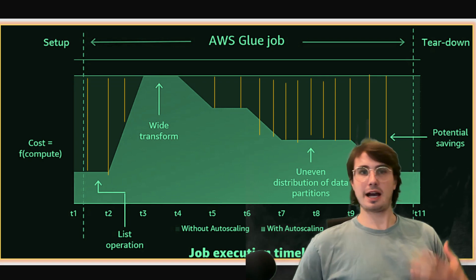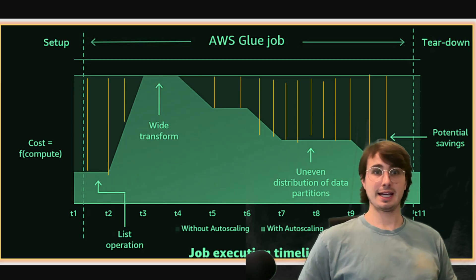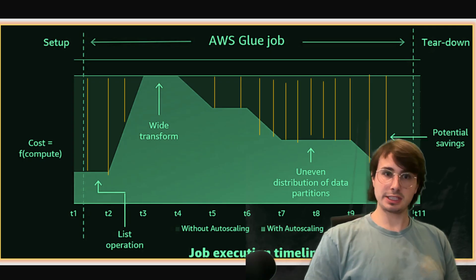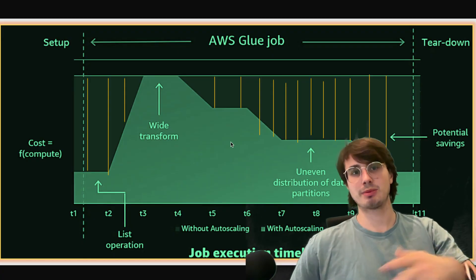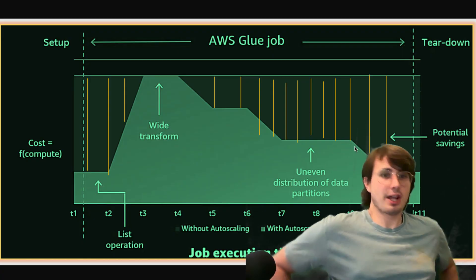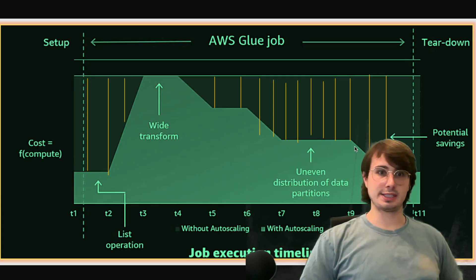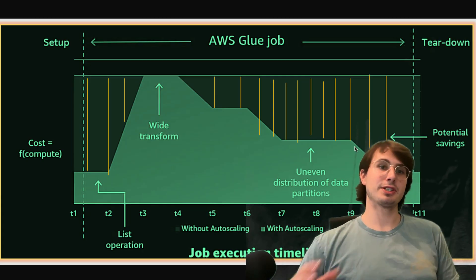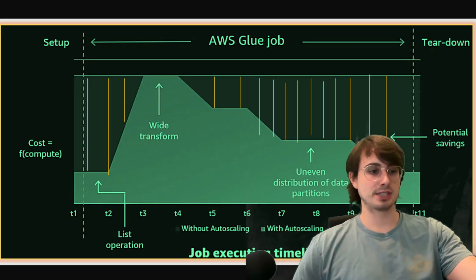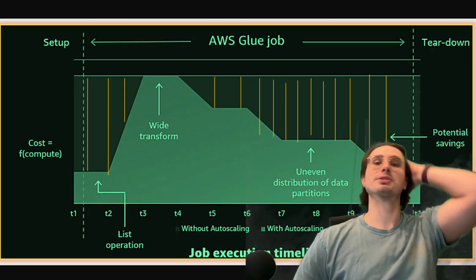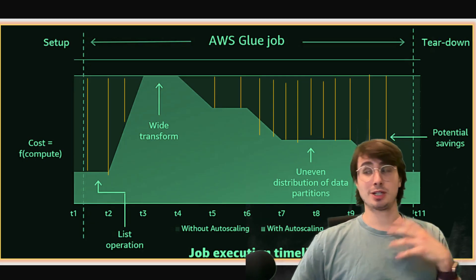Now let's talk about performance optimization. The first thing is choosing the right worker type. You want to benchmark your jobs and figure out what amount of work they actually need. The standard worker for Glue is 16 gigs of memory and four CPUs, and you can increase or decrease that based on what you need. You want to make sure whatever size you choose is not under-provisioned — where you don't have enough resources to complete jobs in time — or over-provisioned, where you have excess compute that isn't actually being used, which you're paying for and causing waste in your costs.